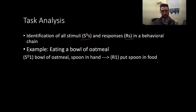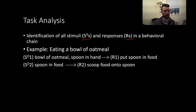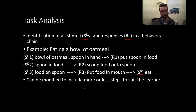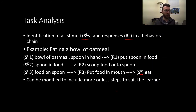Our first response is putting the spoon into the food. Once the spoon is in the food, our second response is to scoop food onto the spoon. Our third stimulus is food now on the spoon, so our third response is to put food in mouth. Then we have our reinforcing stimulus, which is eating. This can be modified to include more or less steps to suit the learner. Someone who has never used a spoon might need more steps — they might need instruction on how to hold the spoon, what sort of spoon is suitable, or how to select a spoon.